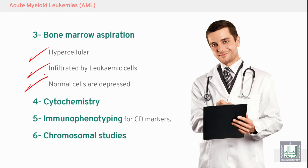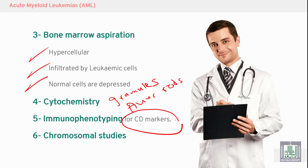Cytochemistry is used to confirm the myeloid lineage, which is characterized by granules and Auer rods. Different cytochemical stains include myeloperoxidase, Sudan black, and specific esterase to diagnose the myeloid series, and non-specific esterase to diagnose the monocytic series. Double staining diagnoses M4.